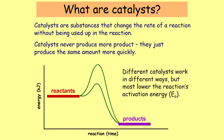Catalysts work in different ways, but the effect of how a catalyst speeds up reaction rate is by affecting the activation energy. Activation energy is the initial amount of energy you need to give a chemical reaction in order for it to start — in the same way that it might take you a little while to get out of bed, chemical reactions also need a little bit of energy to get started.